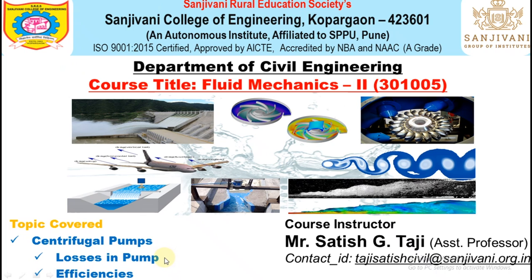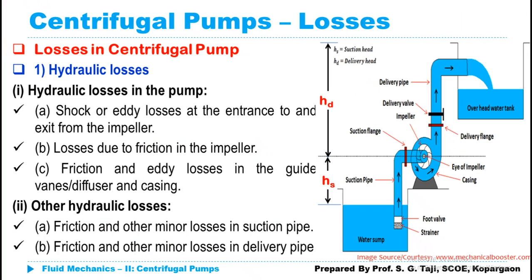Before proceeding for the discussion of efficiencies, we should have an idea about the losses so we can better understand the efficiencies. If we talk about the losses, there are basically two to three types of losses which are taking place in the centrifugal pump. First is the hydraulic losses, second is the mechanical losses, and third are the leakage losses.